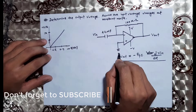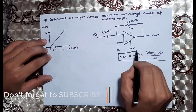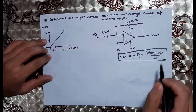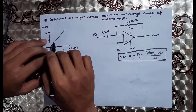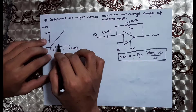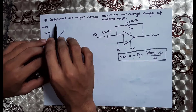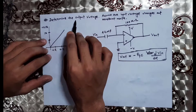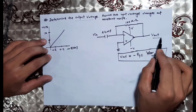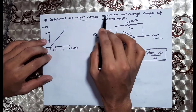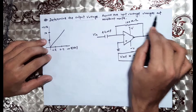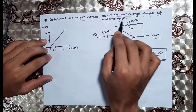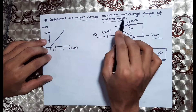We are going to solve the derivation. We are going to determine the output voltage. The voltage changes at a constant rate.